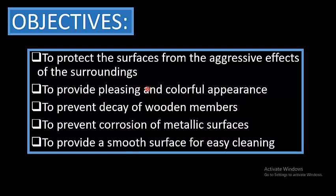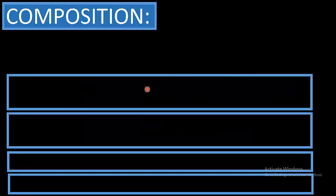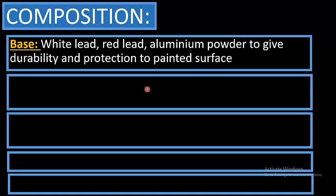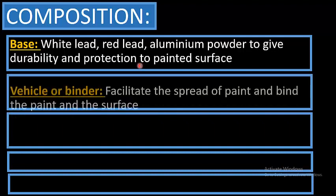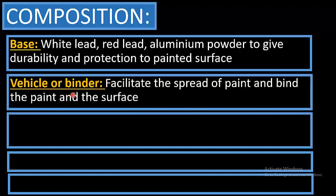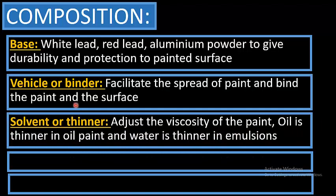Now about the composition of paint. The base includes white lead, red lead, and aluminium powder to give durability and protection to the painted surface. The vehicle or binder facilitates the spread of paint and binds the paint to the surface.